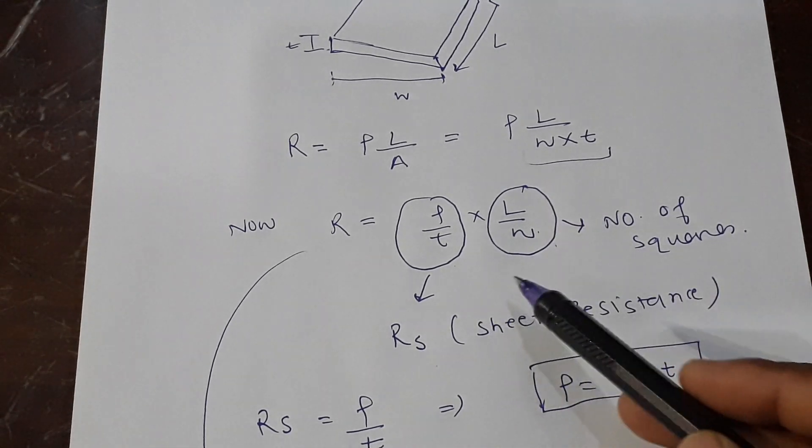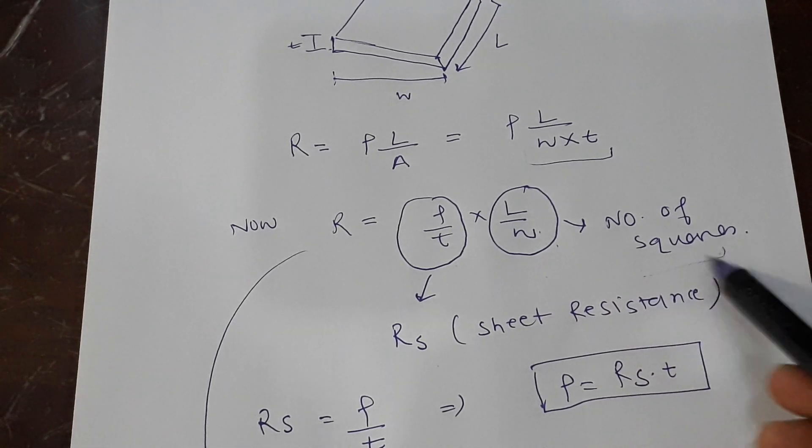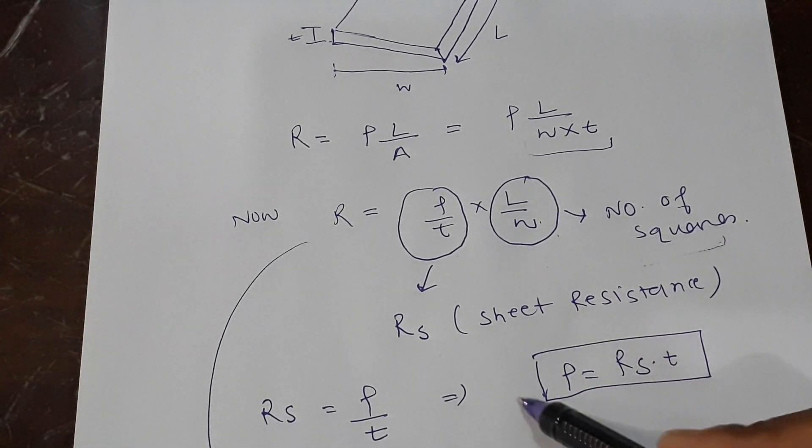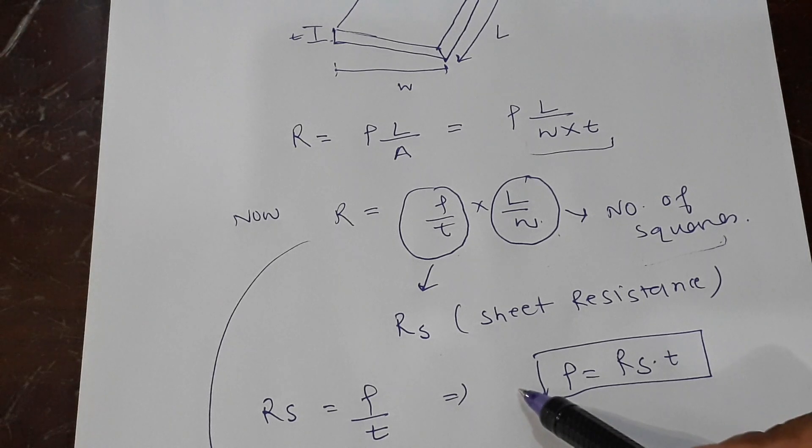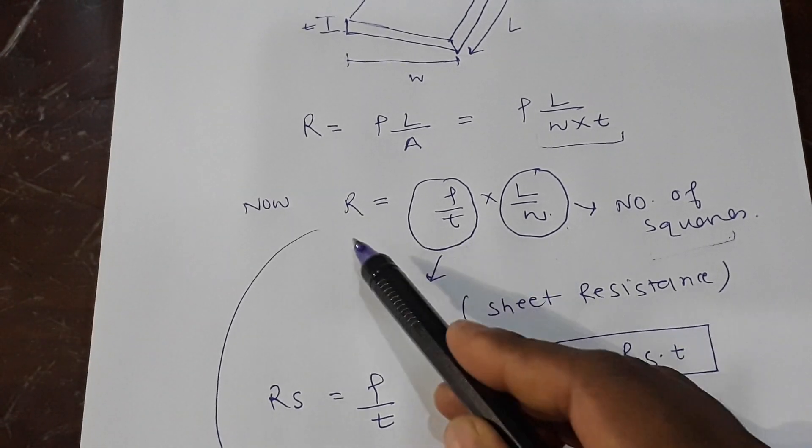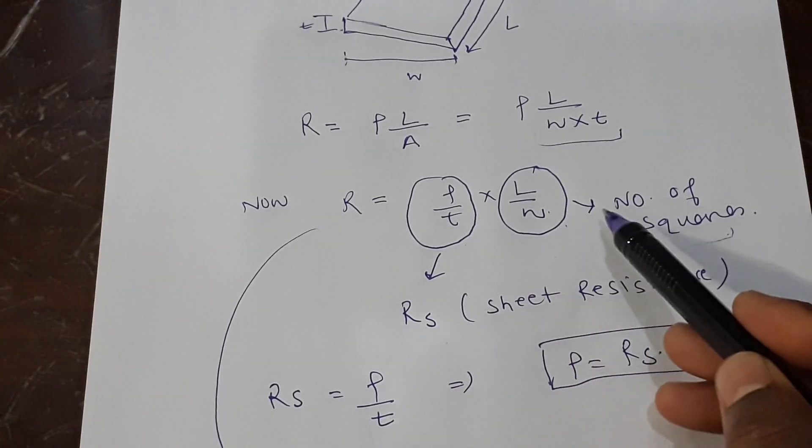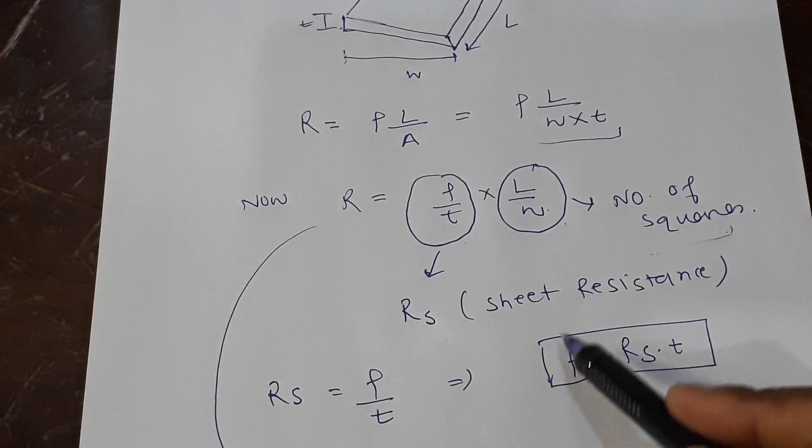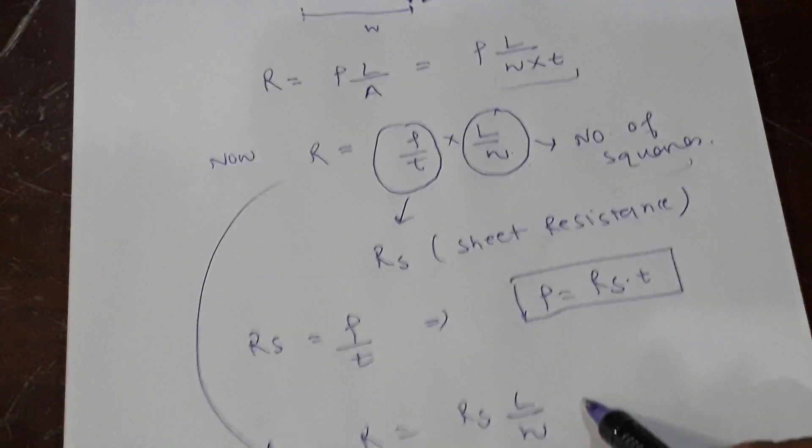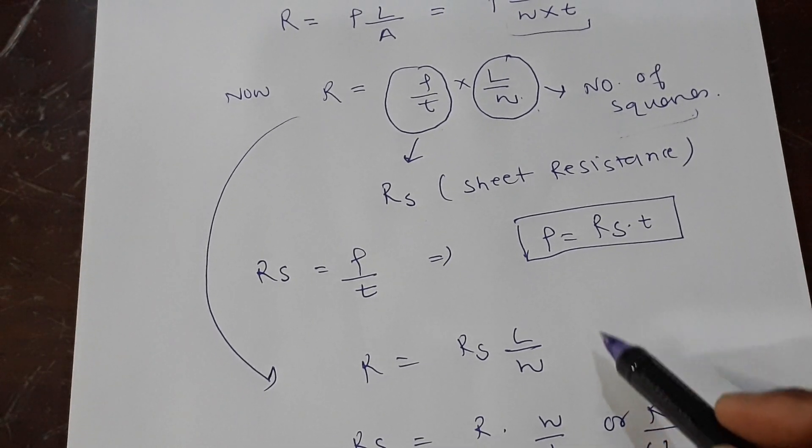So if you see this, ρ/t and R have the same dimensions because L/W is dimensionless. So ρ/t and R have the same dimensions, but people like to call it in a very funny way.